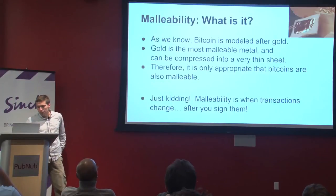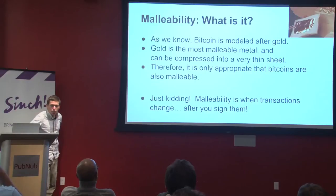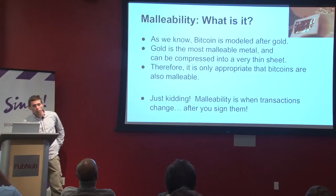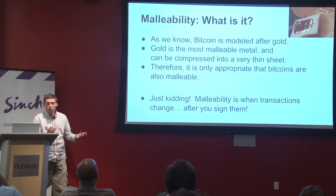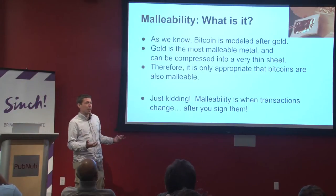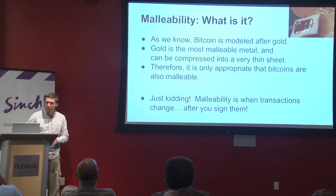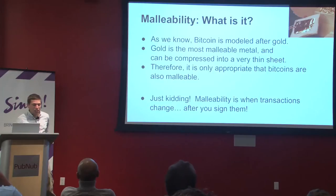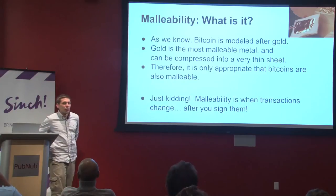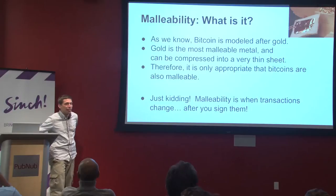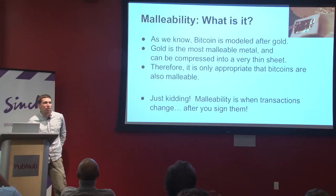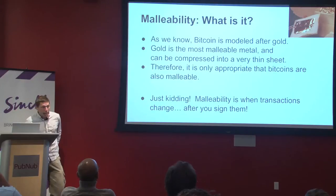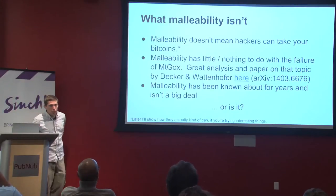What is malleability? As we know, Bitcoin is modeled after gold, which is the most malleable metal, so it's only appropriate that bitcoins are also malleable. Malleability is when a transaction changes after you sign it — which seems like it shouldn't happen. If you write a check, sign it, and then someone changes it afterwards, that's bad. But that happens in Bitcoin.